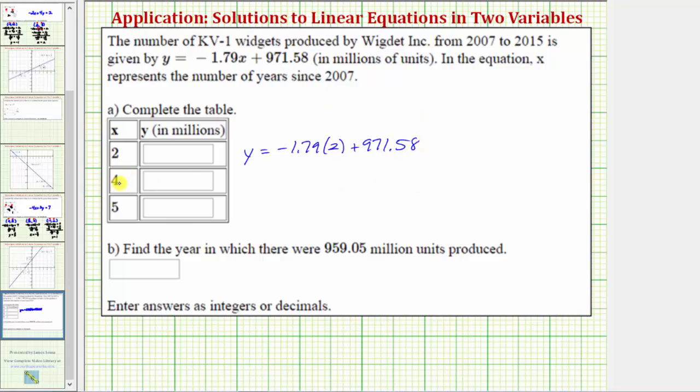In the next row, when x is four, the corresponding y value is y equals negative 1.79 times four, plus 971.58. And when x equals five, the corresponding y value is negative 1.79 times five, plus 971.58.